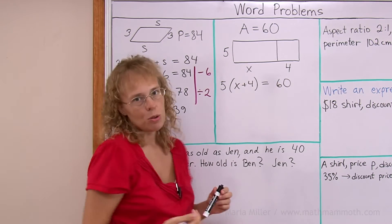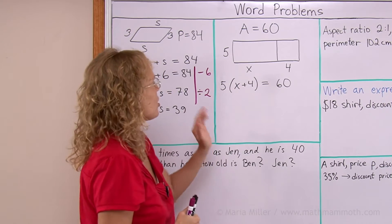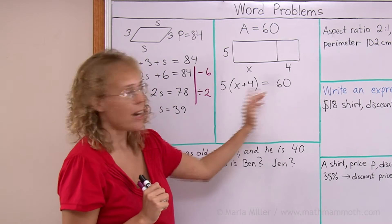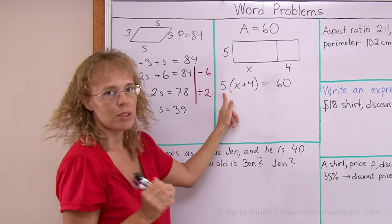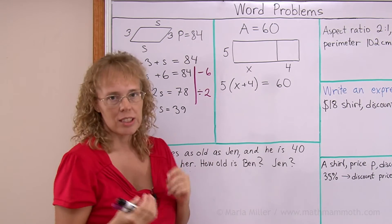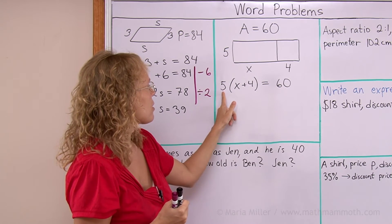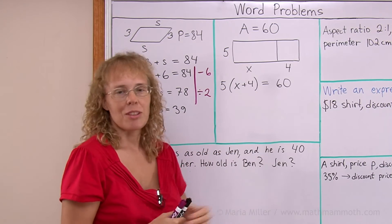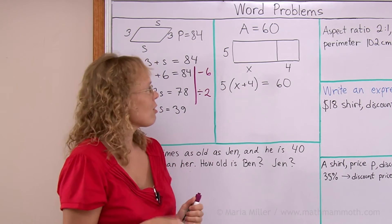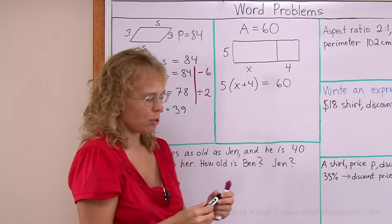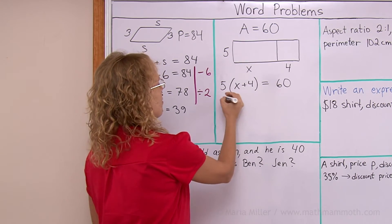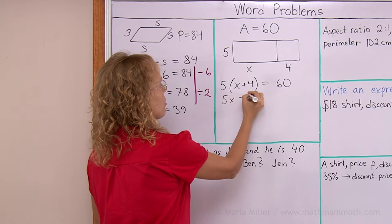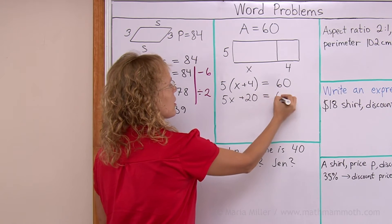And now, there's two ways to go about solving the equation. You could either divide both sides by 5. There's the 5 there. That would disappear. Or you can use the distributive property to write this as 5x plus 20 equals 60. Let's do that because it corresponds to the solution I already explained to you.